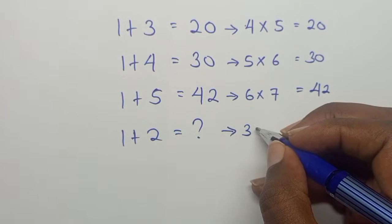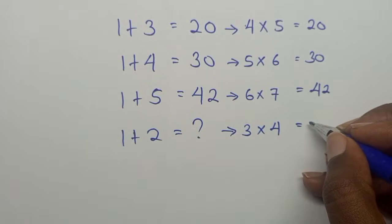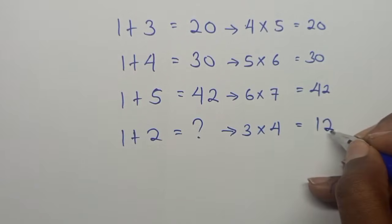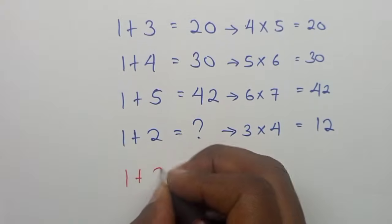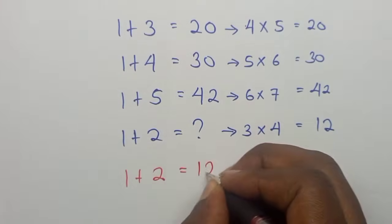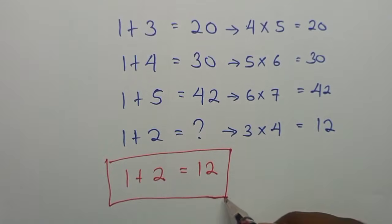which is 3 plus 1, which is 4. So 3 times 4 equals 12. And therefore, the value of 1 plus 2 is actually equals to 12 in this sequence.